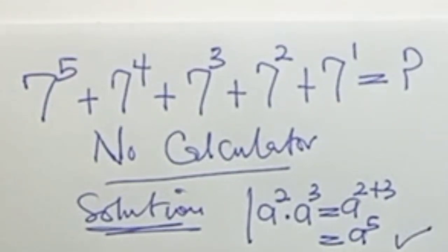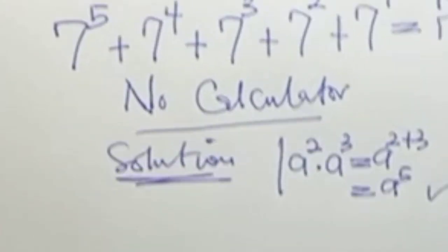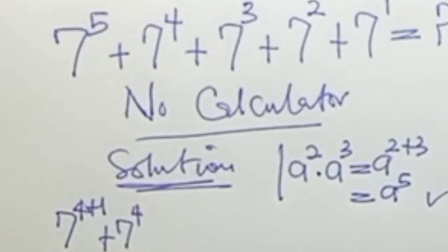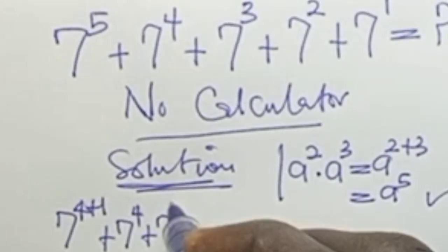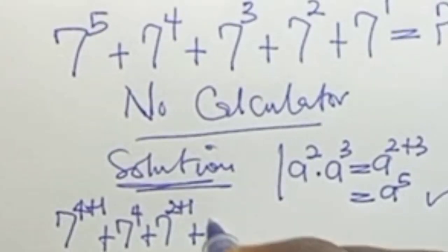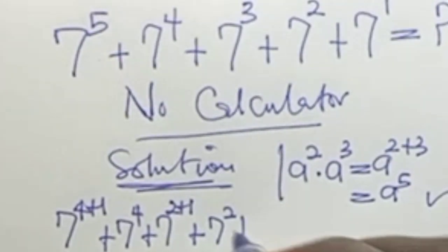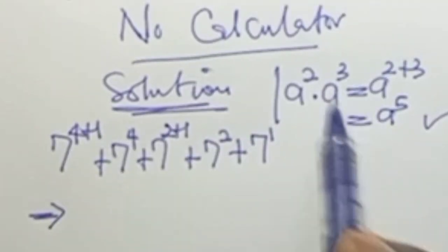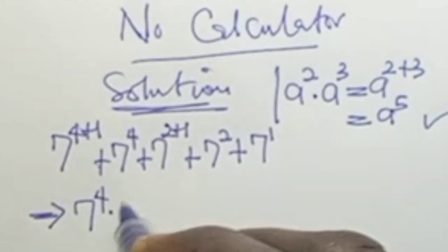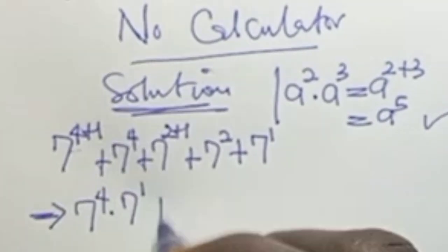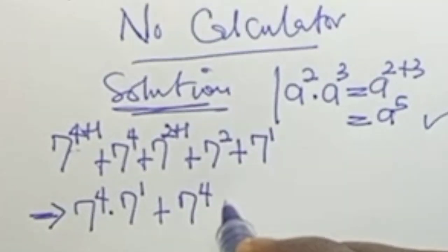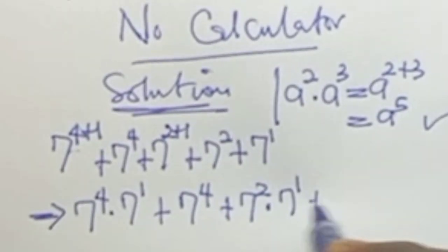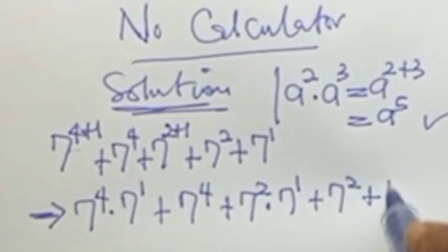With this in mind, we can write our expression as 7 to the power of 4 plus 1, plus 7 to the power of 4, plus 7 to the power of 2 plus 1, plus 7 to the power of 2, plus 7 to the power of 1. Applying the law, this becomes 7⁴ × 7¹ plus 7⁴ plus 7² × 7¹ plus 7² plus 7¹.